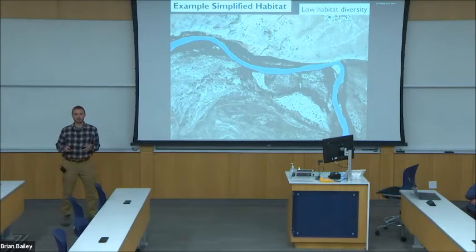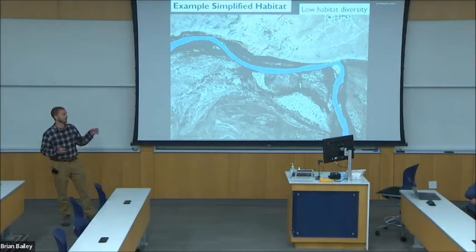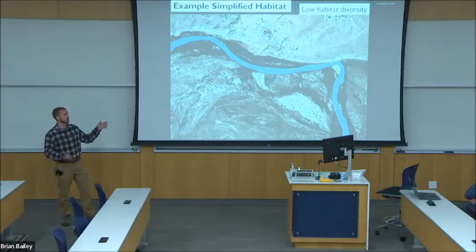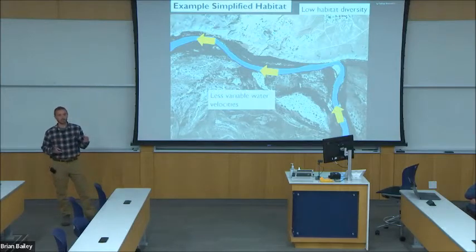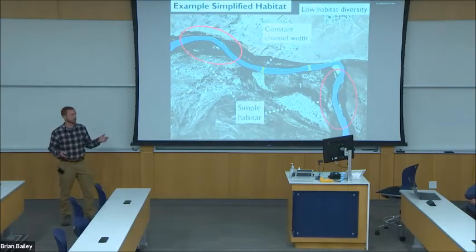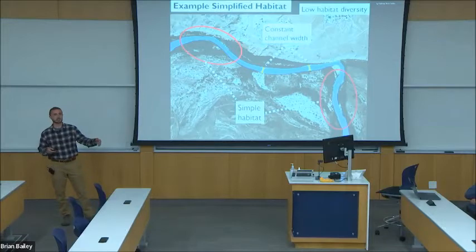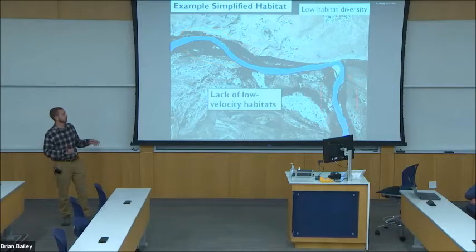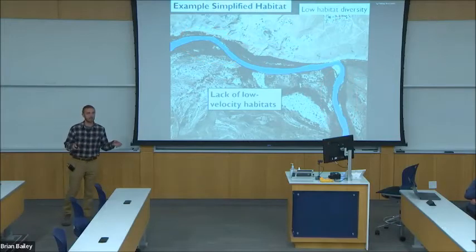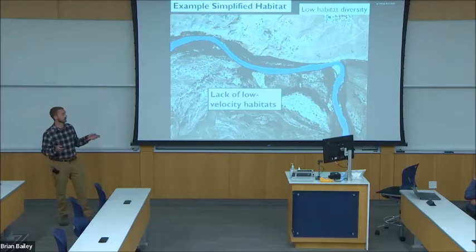Simplified habitats, on the other hand, are often characterized by a simple overall structure, such as pictured here, which is a single channel. Water velocities are much less variable in simplified systems, and so is habitat, with long stretches of the river consisting of simple, similar habitat. Especially lacking in simplified systems are low-velocity habitats, which again are very important for multiple fish species.